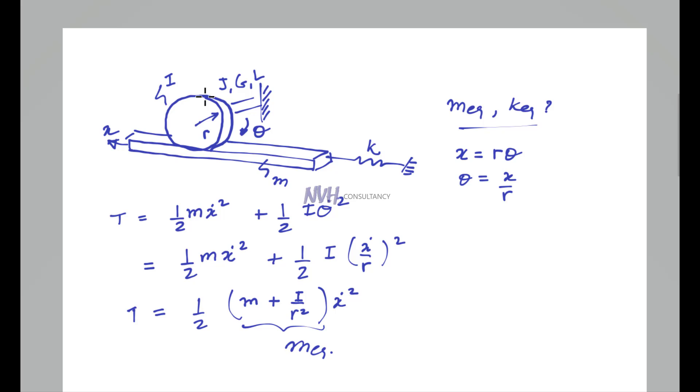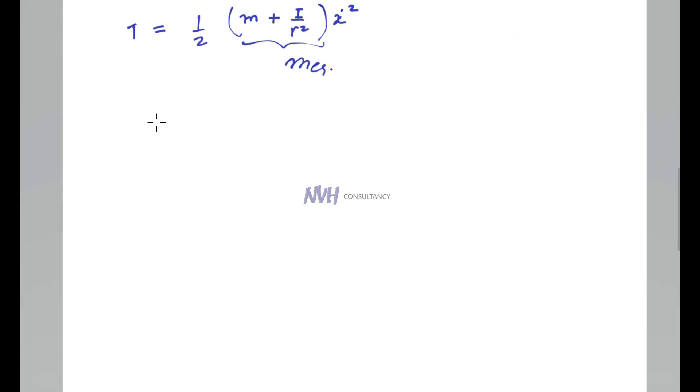Now we will find the potential energy of our system. The potential energy V is equal to half K X square - that is the energy stored in the spring - plus the energy stored in the disk, which is half K T theta square. K T is the torsional stiffness, that is equal to J G over L.